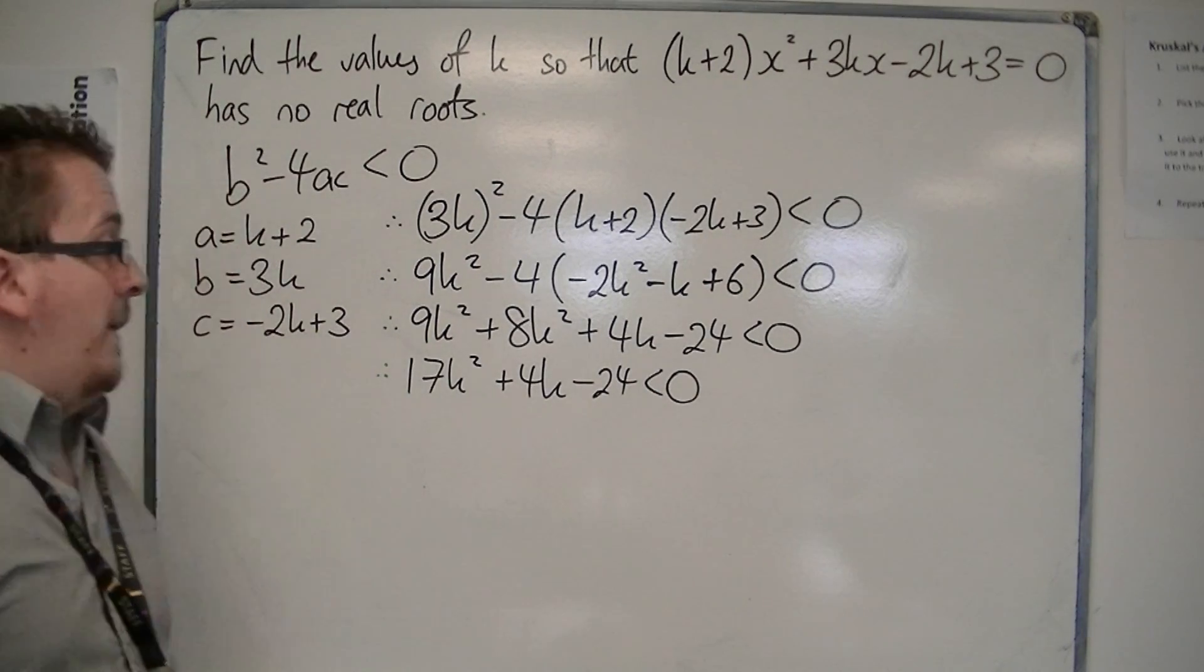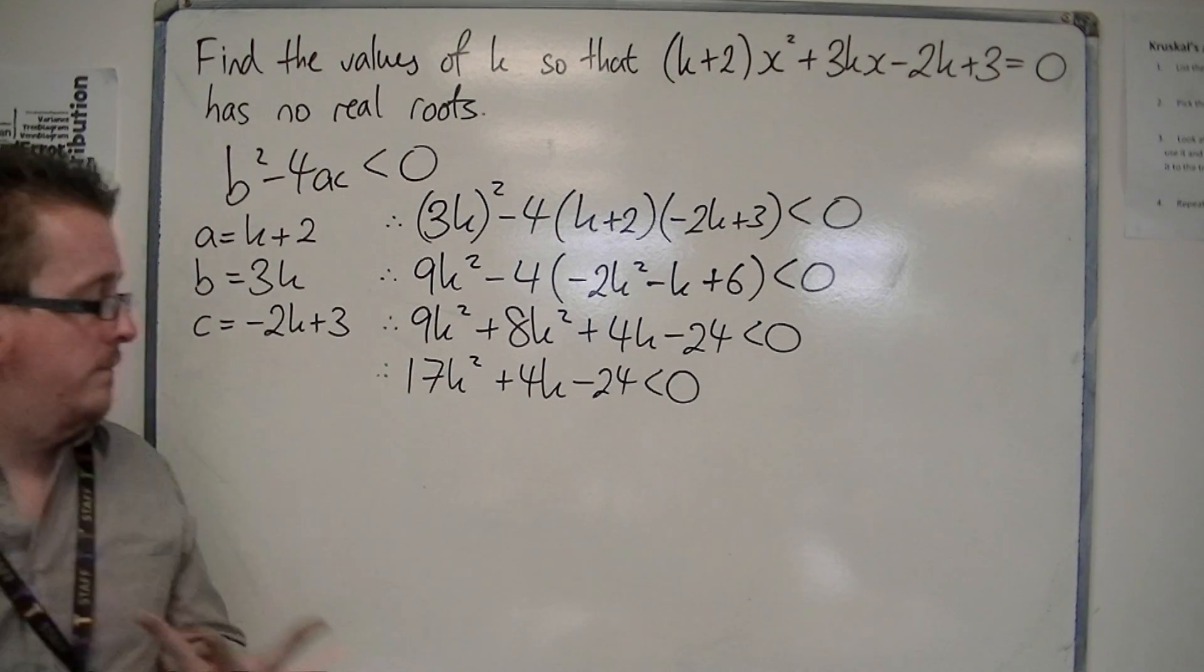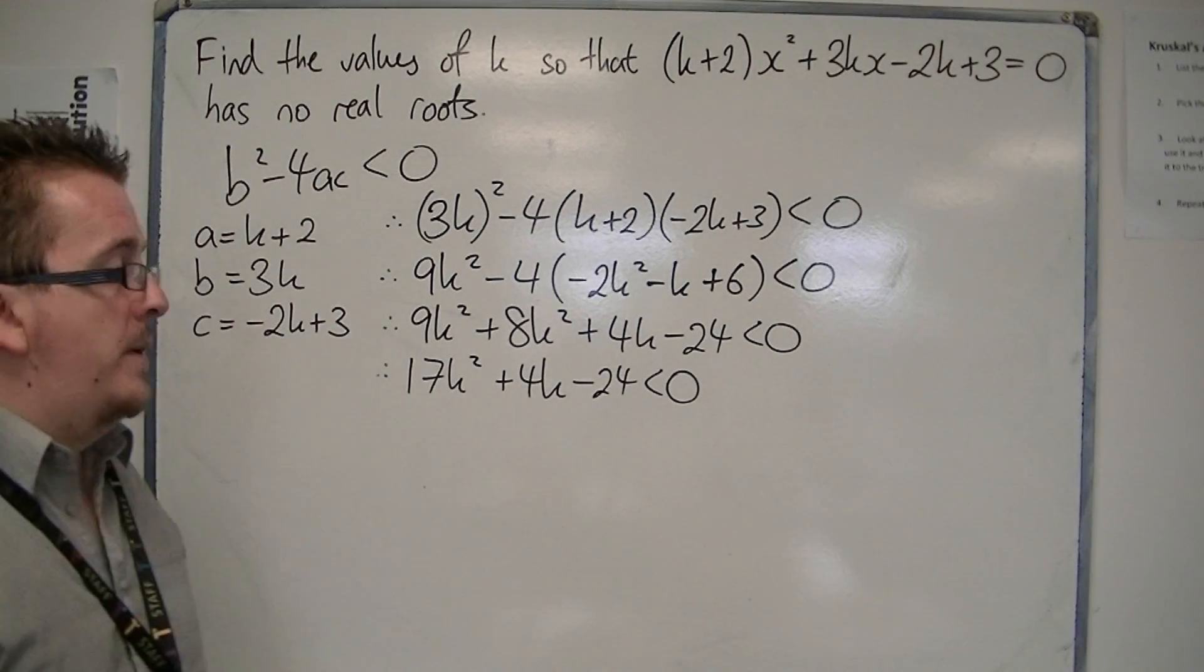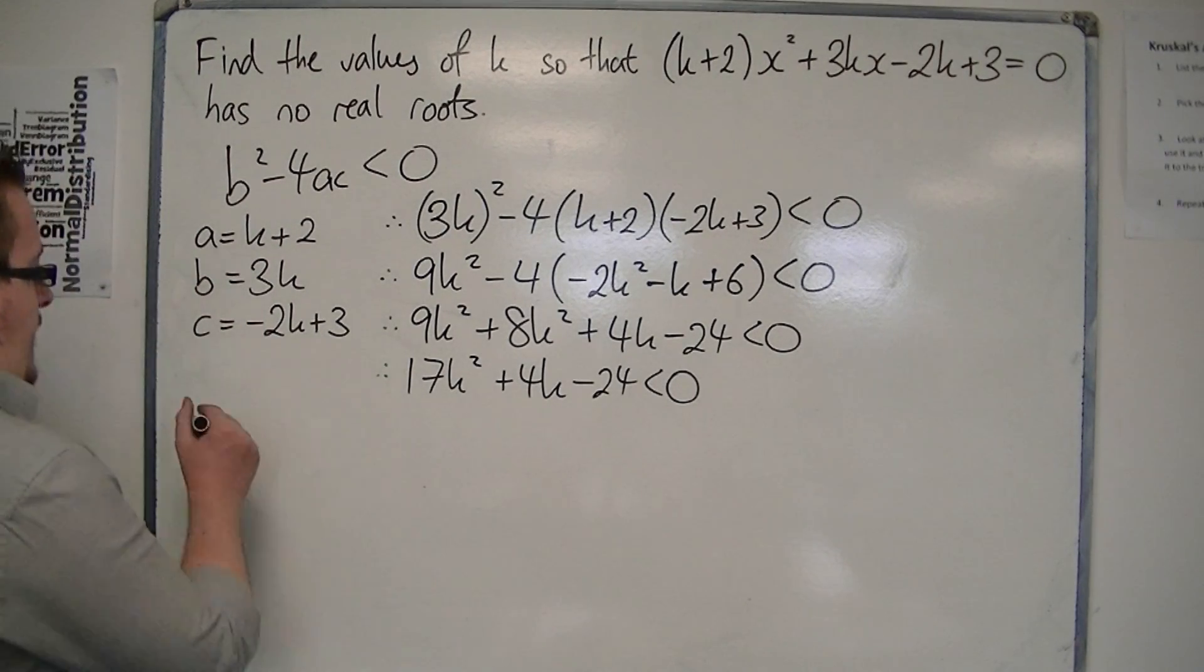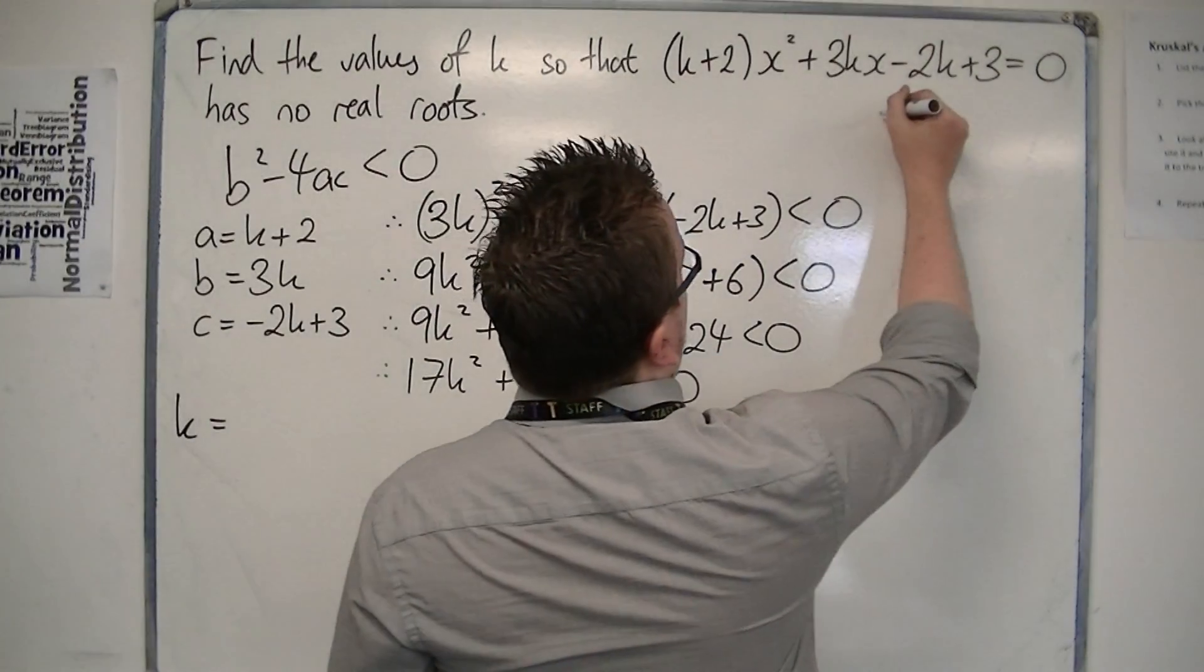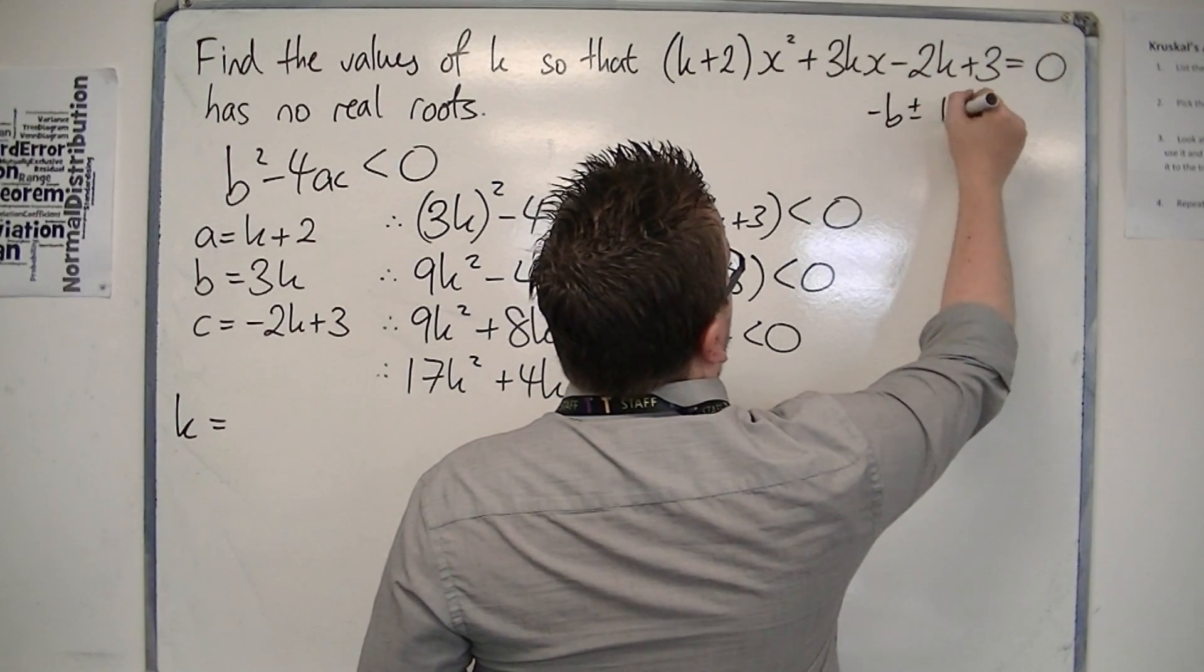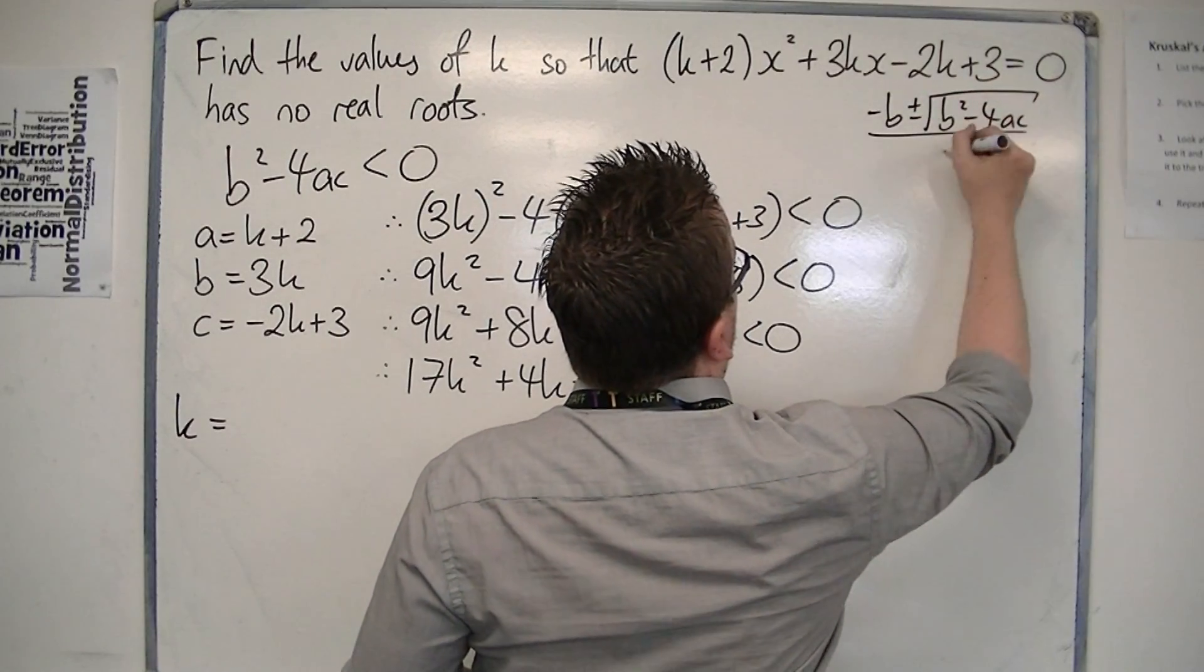So this one doesn't factorize, so you're going to have to use the quadratic formula, and remember you've got to be able to have your basic mathematical tools here of multiplying by large numbers. So what we're going to have here is that k is equal to, using the quadratic formula, which remember is -b ± √(b² - 4ac) all over 2a.